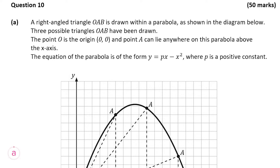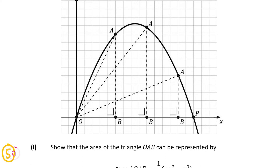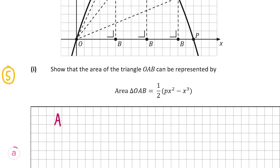Question 10 part A tells us that a right angle triangle OAB was drawn within a parabola, as shown in the diagram below. They've also shown us three possible triangles that A, O, B could have been. Point O is the origin, which is (0, 0), and A can lie anywhere on this parabola above the x-axis. We're given the equation of the parabola, and that's y = px minus x squared, where p is a positive constant. Part 1 is worth five marks and wants us to show that the area of triangle OAB can be represented by half times px squared minus x cubed.